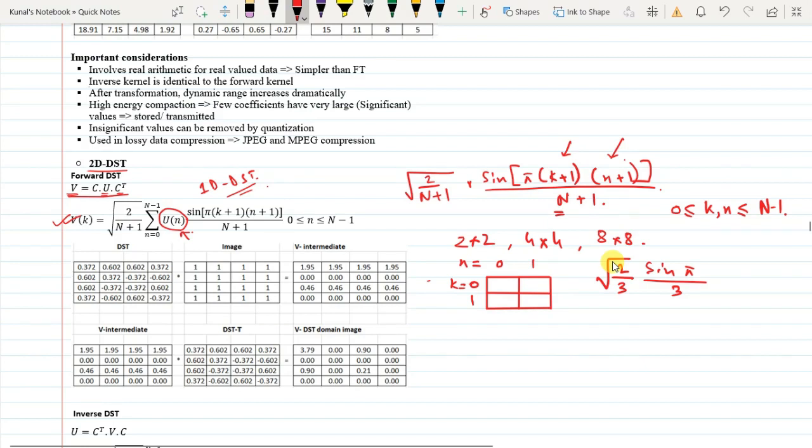For n equals 1, k equals 0, we will be having root 2 by 3 sine of, k is 0 so this is 1, and this gives us 2 pi by 3. Similarly, for position 0,1, it will be having root 2 by 3 sin of 2 pi by 3. And over here this will be 2 times 2, which is 4, so sin of 4 pi by 3.